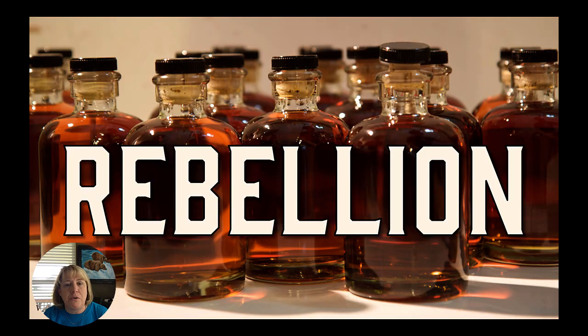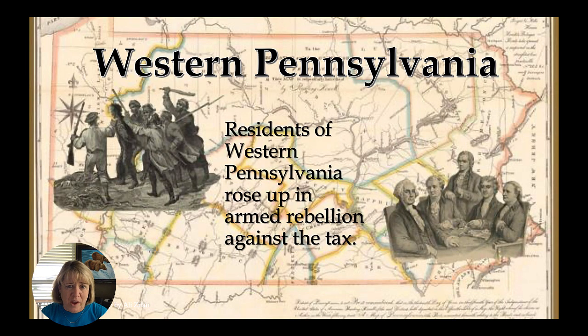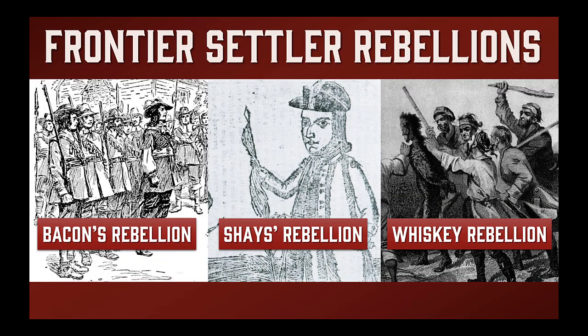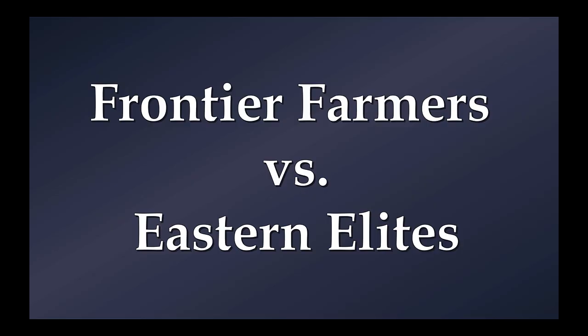This is what leads to the rebellion in western Pennsylvania. Residents — specifically those farmers and whiskey distillers — rose up against the government saying the tax was unfair. We shouldn't be surprised there was a rebellion, because that had been the standard operating procedure since the late 1600s: Bacon's Rebellion in 1676, Shays' Rebellion in 1780, and now the Whiskey Rebellion in 1794. All of these were really frontier farmers versus the eastern elites.